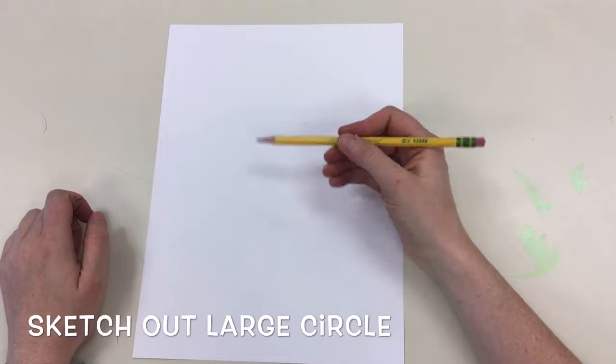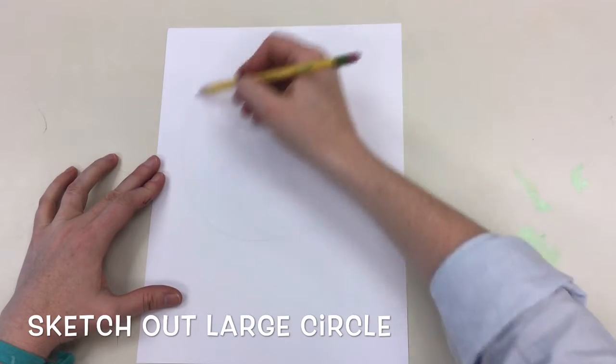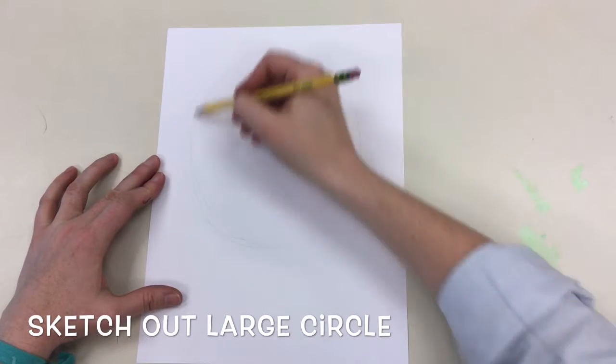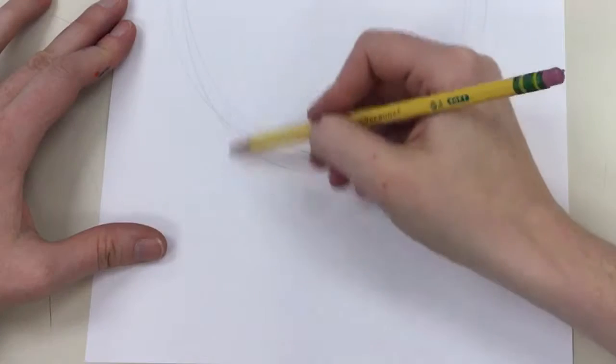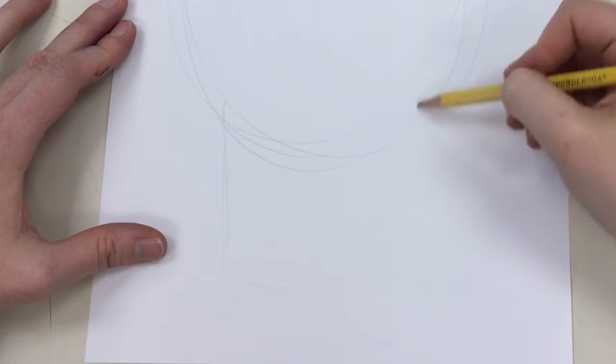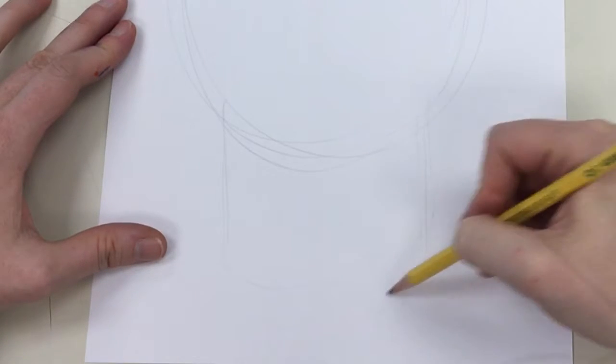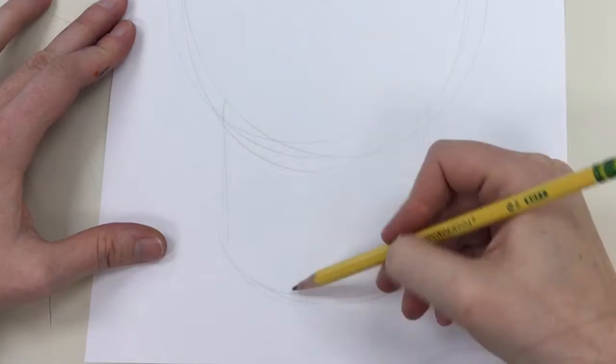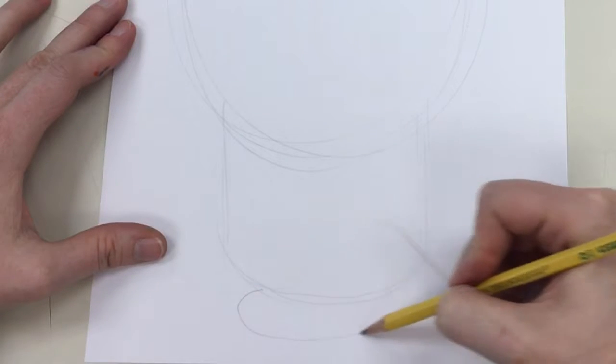First we're going to sketch out a large circle for the head of our skull. Next you're going to draw two straight lines on each side and a smiley face for the chin. I had space underneath so I made the neck by making ovals.